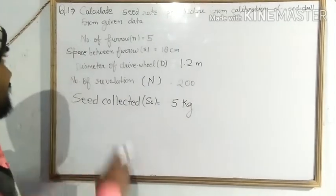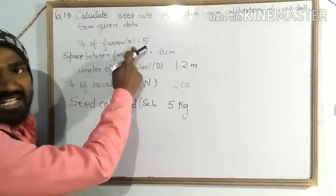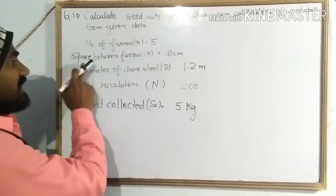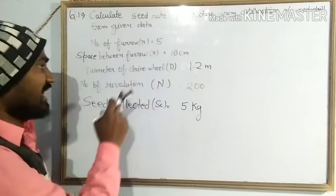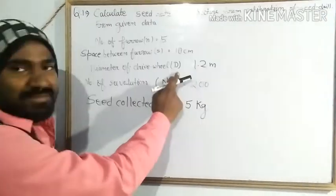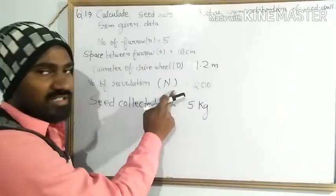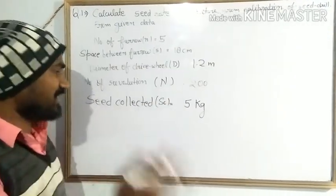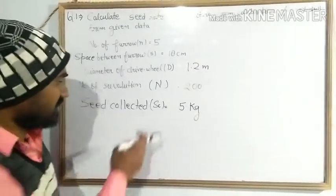This is number of furrow which is indicated by small n. This is space between furrow which is indicated by small s. This is diameter of drive wheel which is indicated by capital D. This is number of revolution which is indicated by capital N.